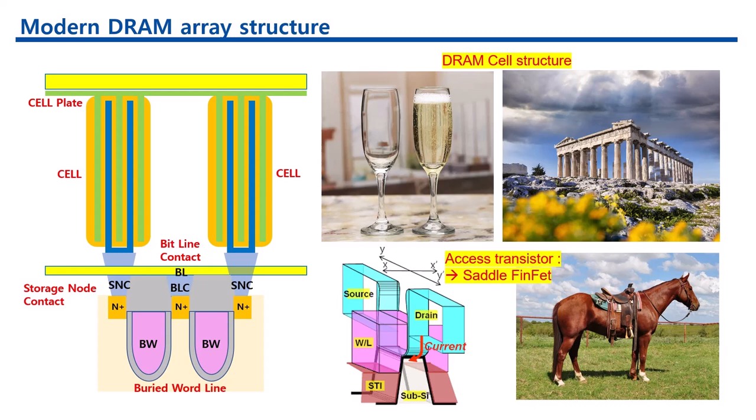Recent DRAM innovations and design improvements include the buried word line scheme. This design helps in reducing the coupling capacitance of the bit line. By placing the word lines deeper within the DRAM cell structure, you minimize the interaction between adjacent word lines and bit lines, which can help reduce noise and increase the overall performance of the memory cell.